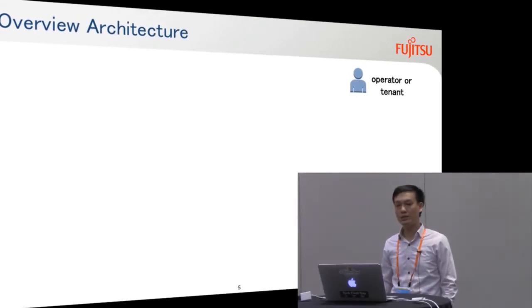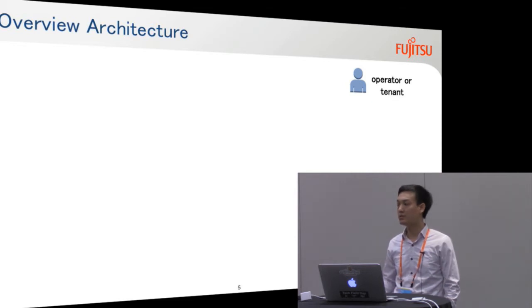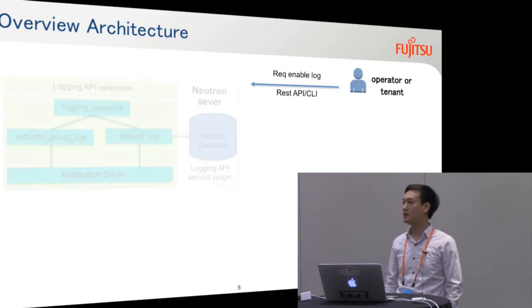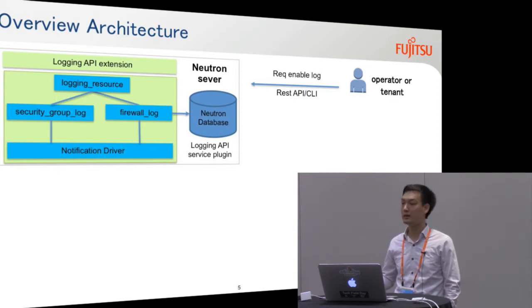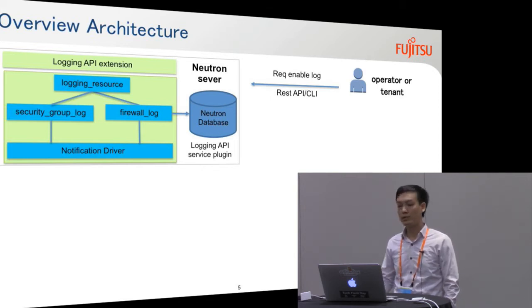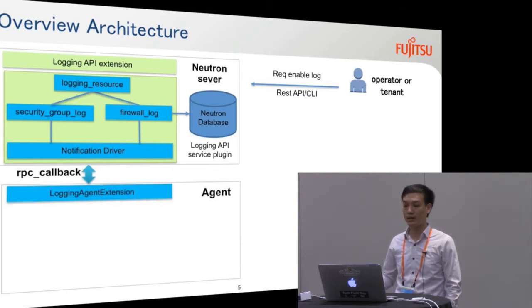That is just an overview of the logging API model. Next, I want to introduce the overview of the architecture we are going to propose. When the operator or tenant wants to enable a log filter, they will send the enable log request to the system via the REST API or CLI as I explained in the previous slide. After the request is sent, the Neutron server will process it. In the Neutron server, we propose some new classes and modules — including a logging API extension class and new models for logging resources and security groups.